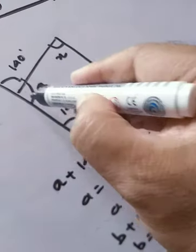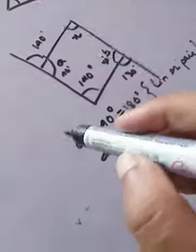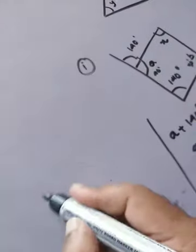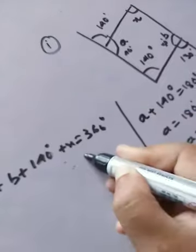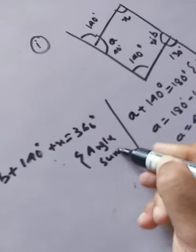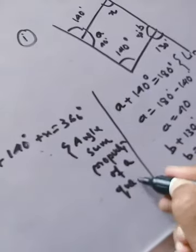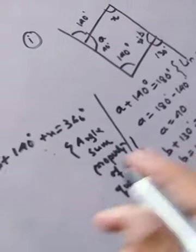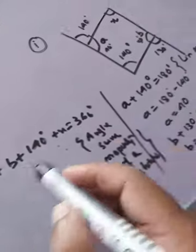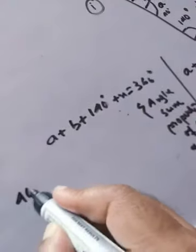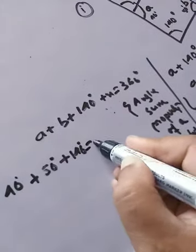Now if you carefully observe, this is a quadrilateral, and the sum of interior angles of a quadrilateral equals 360°. So: a + b + 140° + x = 360°. This is the angle sum property of a quadrilateral — for any quadrilateral, all interior angles must add up to 360°. The value of a is 40°, b is 50°, and there is 140°; we need to find x.